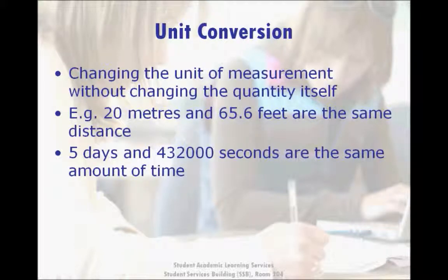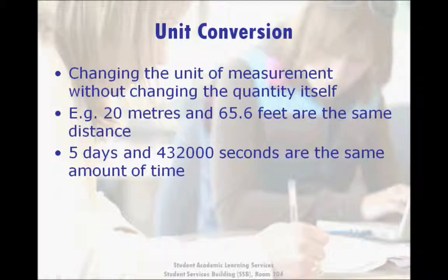To find out what the distance of the hallway is in feet, I could either measure it again using a tape measure with feet marked on it, or I can do a mathematical calculation, which I'll explain later. Either way, the answer is that the distance of the hallway is 65.6 feet, because that is the same distance as 20 meters. The number changed from 20 to 65.6, and the units changed from meters to feet, but the actual distance being measured is still the same because it's the same hallway.